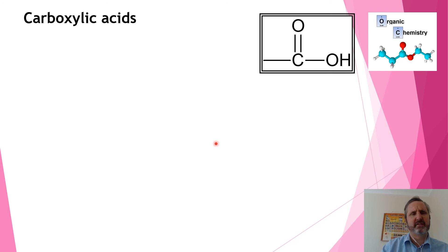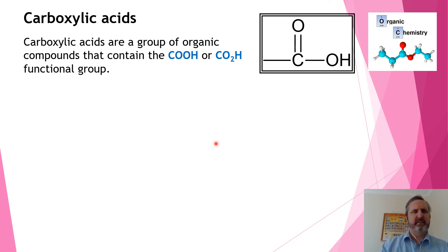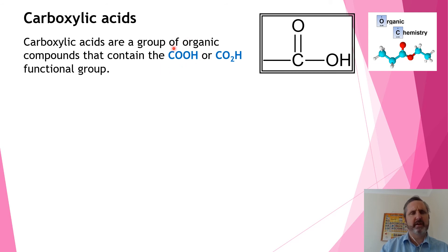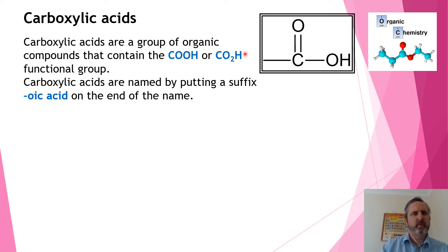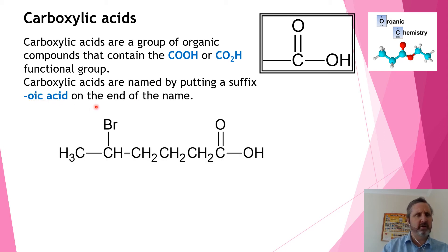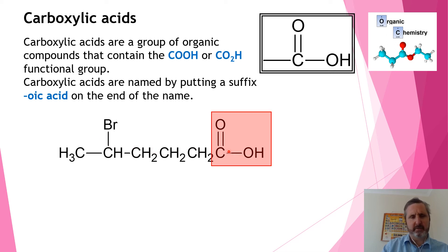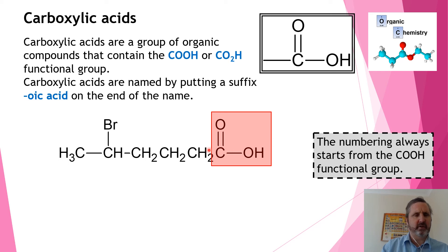Carboxylic acids have the functional group C double bond O with an OH at the end. They're sometimes written in shorthand as COOH or CO2H. To name them, we remove the E and write OIC ACID at the end of the molecule. For example, this chain is 1, 2, 3, 4, 5, 6 carbons long, so this molecule is hexanoic acid.